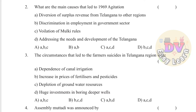Question 2: The main causes that led to the 1969 agitation were: diversion of surplus revenue from Telangana to other regions; discrimination in employment in the government sector; and violation of Mulki Rules.